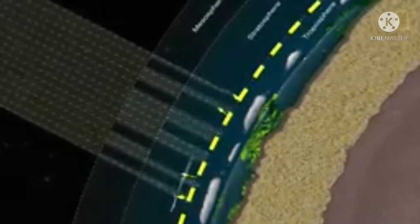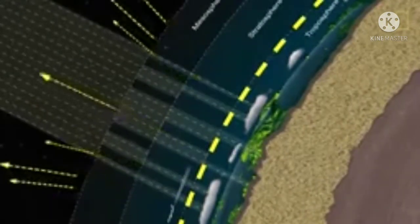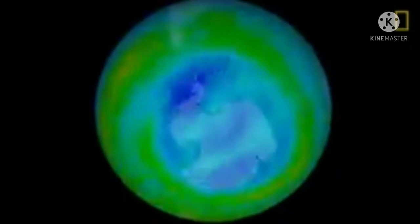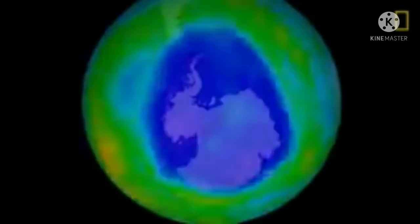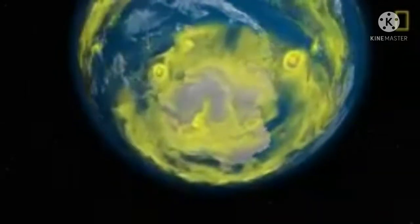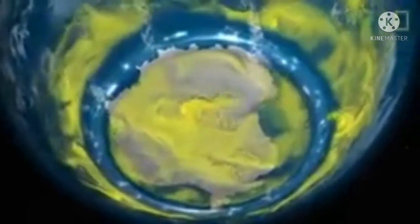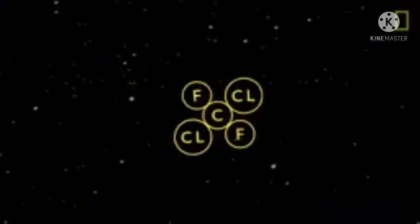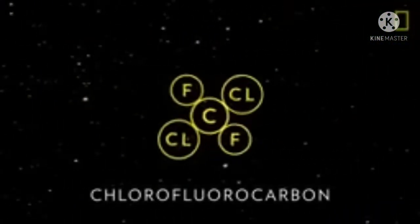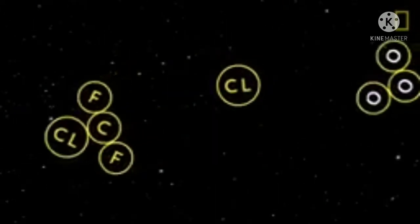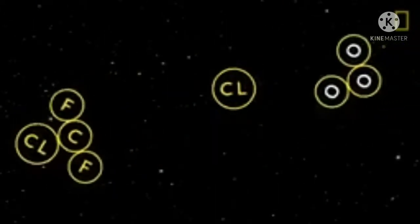The ozone layer absorbs about 90 percent of ultraviolet light from the sun. But the ozone layer has been damaged by a chemical called CFC, which is the primary cause of ozone layer breakdown. CFC is a molecule containing the elements carbon, fluorine, and chlorine.